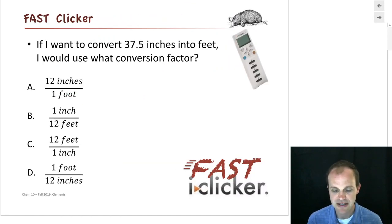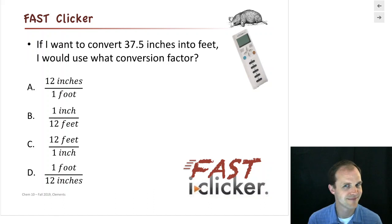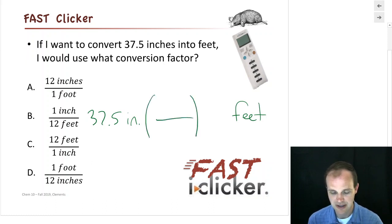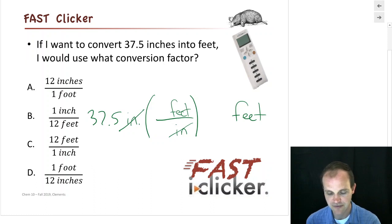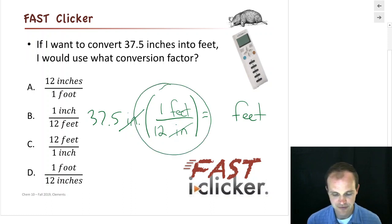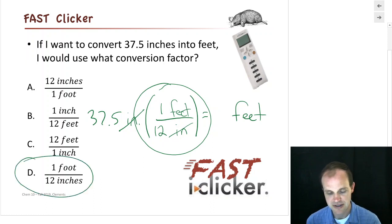Another example: convert 37.5 inches into feet. What's my conversion factor? Inches on top here, so inches on the bottom of the conversion factor, and feet on top. Inches cancel. I know there are 12 inches in one foot, so 12 is attached to inches wherever it goes. The conversion factor is one foot over 12 inches, which is answer D.